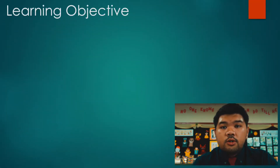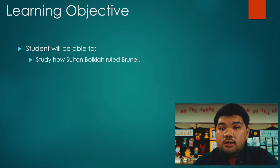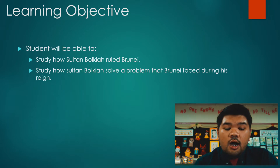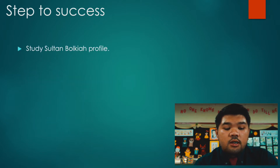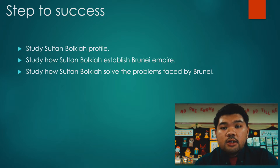Before we start our lesson, our learning objective is: at the end of the lessons, students will be able to study how Sultan Bolkiah ruled Brunei, and how Sultan Bolkiah solved the problems that Brunei faced during his reign. Our steps to success: first, study Sultan Bolkiah's profile; second, study how Sultan Bolkiah established the Brunei empire; and third, study how Sultan Bolkiah solved the problems faced by Brunei.